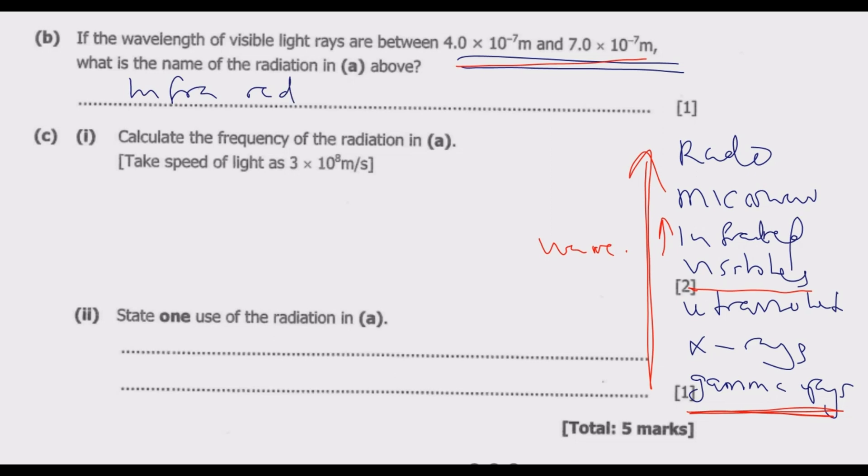Infrared is basically the radiation we are talking about. Having identified that, we can proceed to the next one, which is C roman numeral one: calculate the frequency of the radiation in A. Take speed of light to be 3 times 10 to the power 8 meters per second. We know that the relationship is velocity equals wavelength multiplied by frequency, so frequency is given by velocity over wavelength.